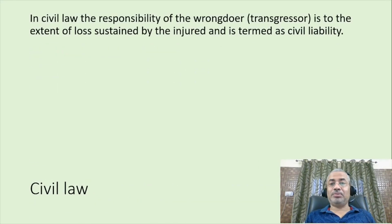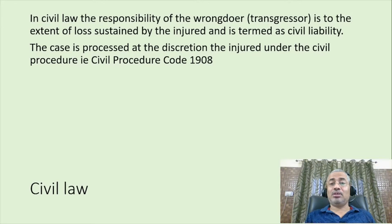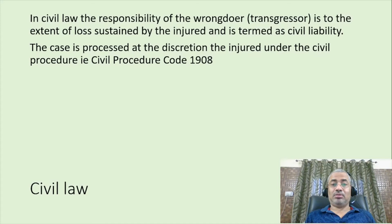In civil law, the responsibility of the wrongdoer's transgression is to the extent of loss sustained by the injured and is termed as civil liability. The case is processed at the discretion of the injured — if the injured does not wish to pursue the case, he is free to do so. It is processed under the Civil Procedure Code 1908.